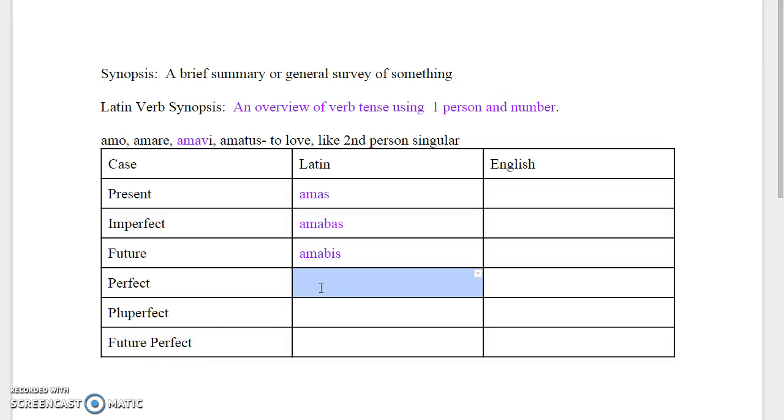So we take that and we do the perfect tense in the second person singular which is amavisti, and then amaveras using the imperfect form of sum there on the end, and amaveris using the future tense form of sum on the end.